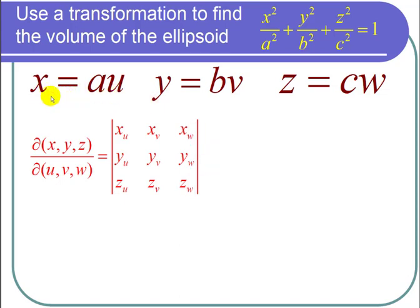These partial derivatives turn out to be very simple. x sub u is just a. x sub v and w are 0 because there are no v and w's in au. So I have a 0, and similarly y sub u and y sub w are both 0, and y sub v is equal to b. So I have 0, b, 0, and for z sub u and z sub v, those are both 0, and z sub w is equal to c.